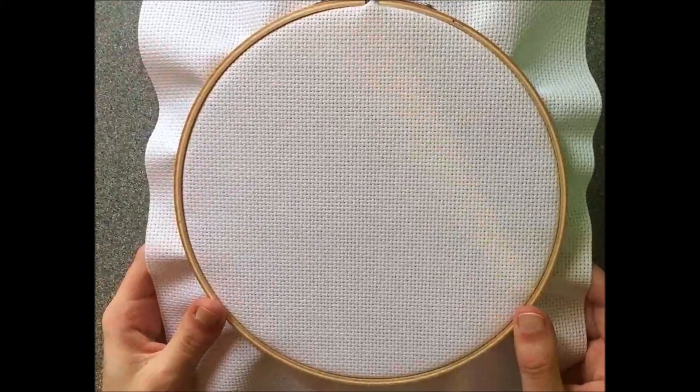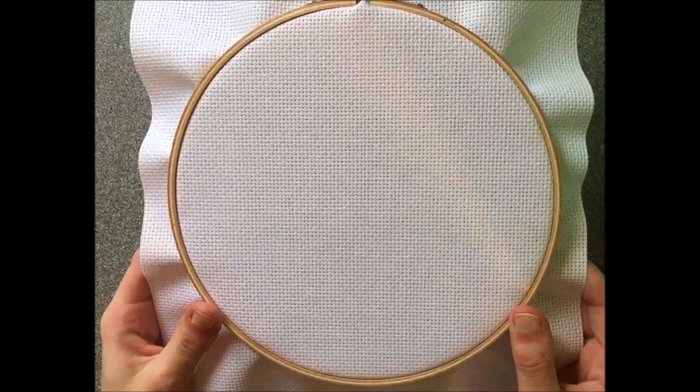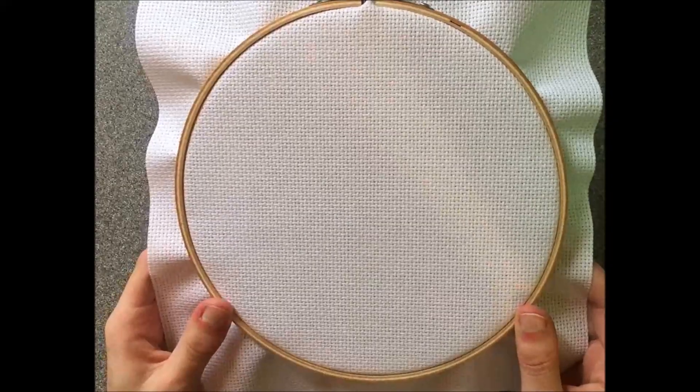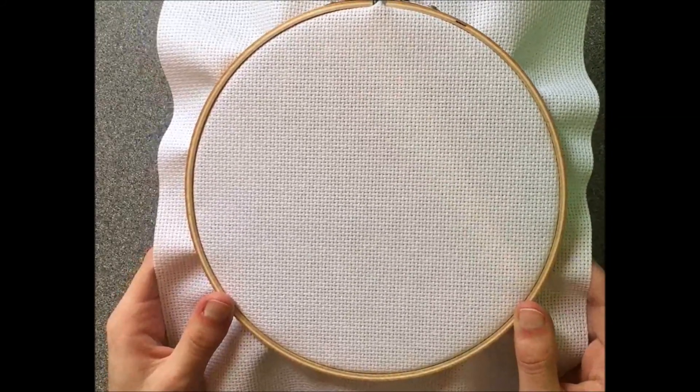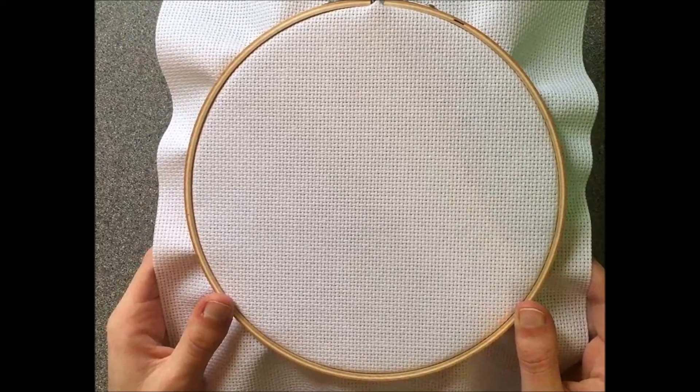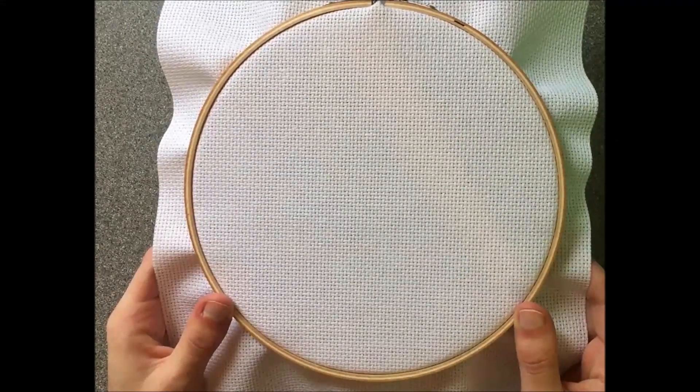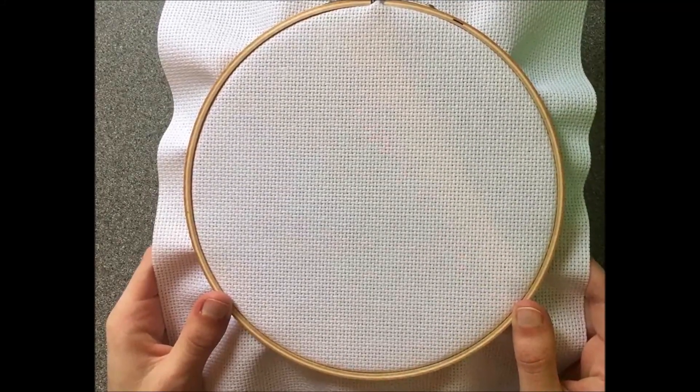So there you go! That's how you put the embroidery hoop on the embroidery cloth. If you would like to learn more about how to cross stitch please subscribe to my channel here on YouTube and please like this video if you found it to be helpful. Thank you for watching.